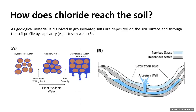When talking about chloride in the soil, the chloride originates in rock and moves at some point to the soil. To allow that movement from rock to soil, we have two principal mechanisms. The first one is capillary water. For example, when you have a straw inside a water glass, you see the water level in the straw is the same as in the glass. That same force moves water from groundwater to the soil surface with chloride and other nutrients dissolved in it.